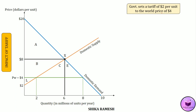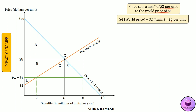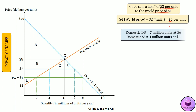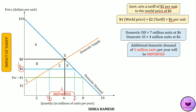Suppose the government sets a tariff of $2 per unit on top of the world price of $4, making the total price per unit $6. At this new price of $6, the domestic demand is 7 million units whereas the domestic supply is 4 million units. The domestic producers will lower their price to $6 per unit, at which they are willing to produce only 4 million units, while domestic demand is 7 million units. So the additional domestic demand of 3 million units per year will be imported.